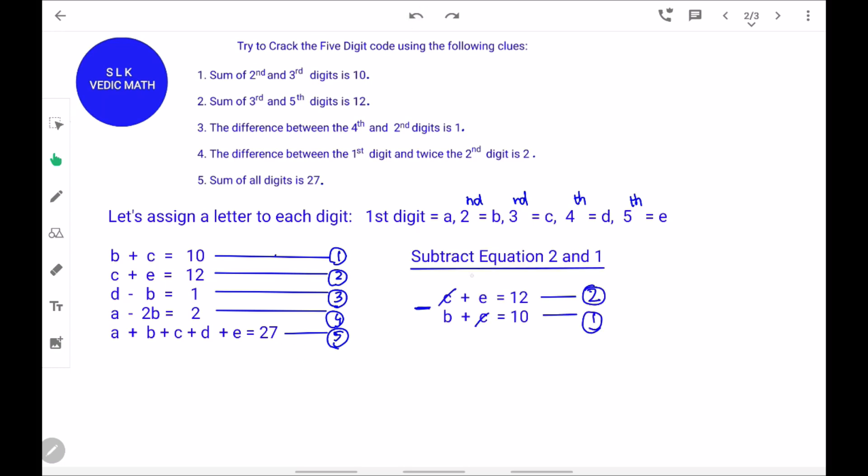Next, subtract equation 2 and 1. We cross out the C's because C minus C equals 0. And we take E minus B. 12 minus 10 is 2. So, E minus B equal to 2.